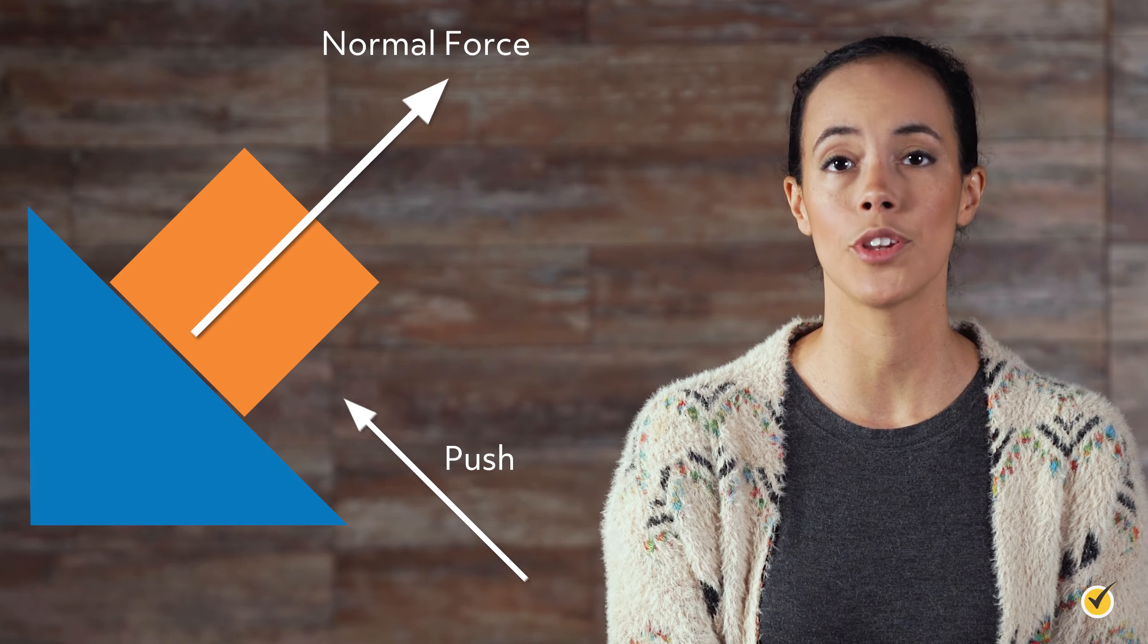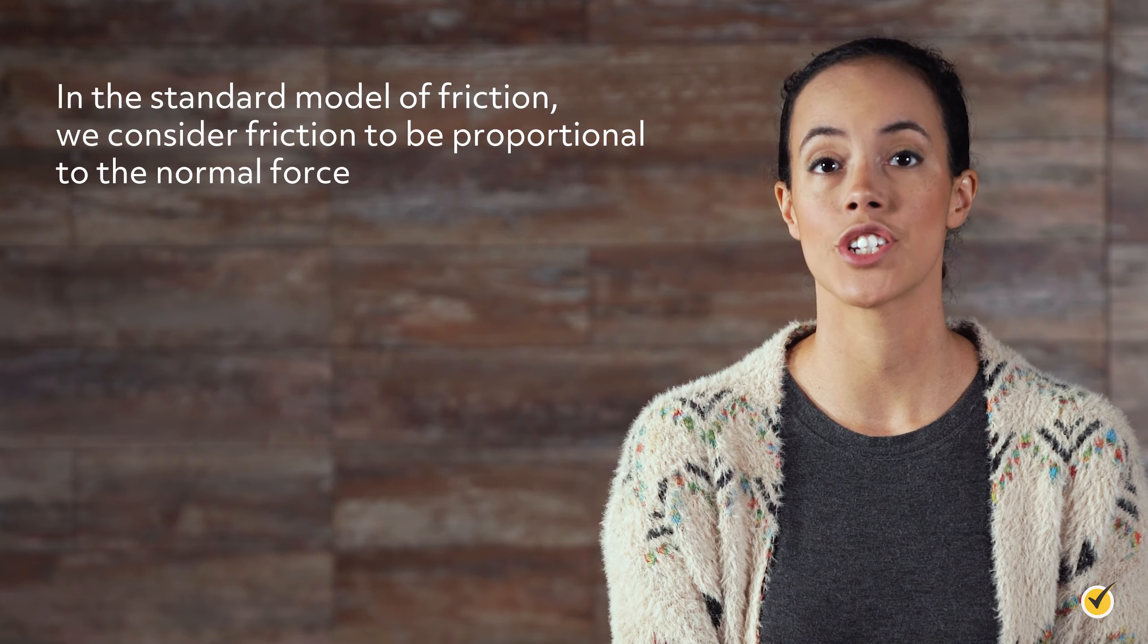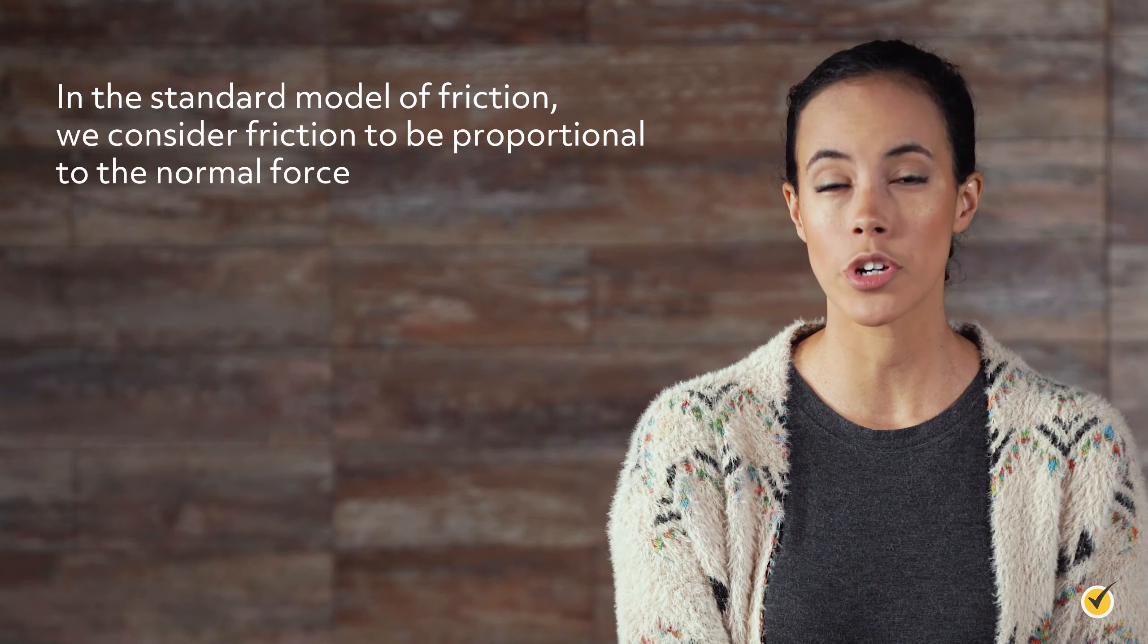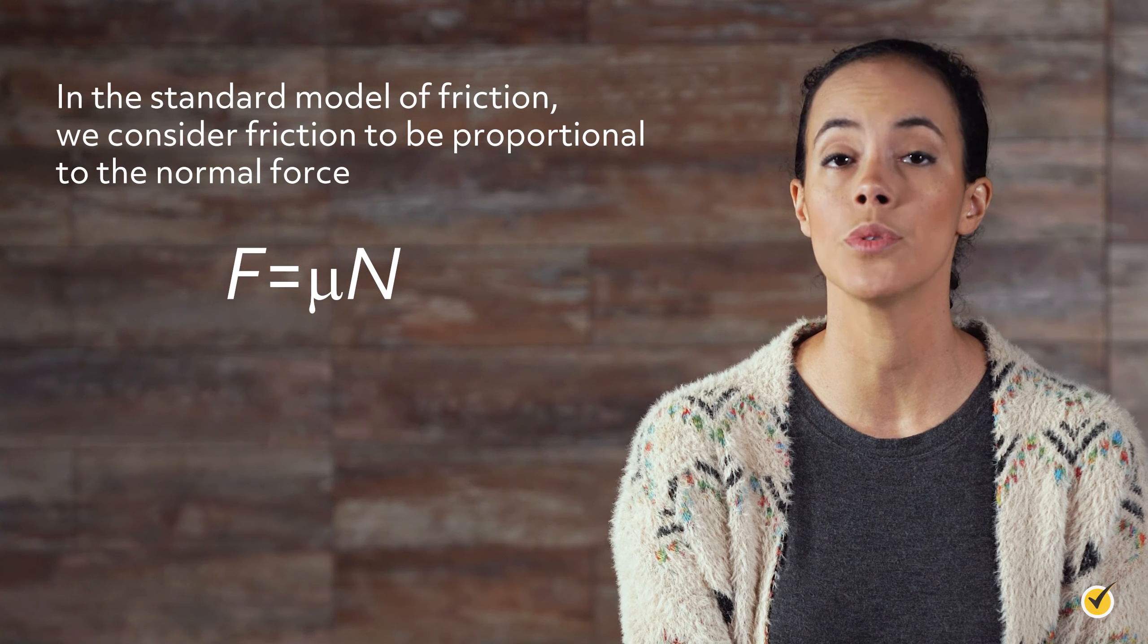When you push a box up a ramp, the normal force is perpendicular to the ramp. In the standard model of friction, we consider friction to be proportional to the normal force. Frictional force f equals mu times n.